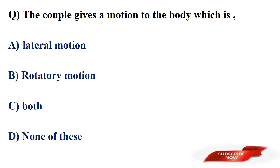The couple gives a motion to the body which is? Options: lateral motion, rotary motion, both a and b, none of those. Answer: option B, rotary motion. The couple gives a rotary motion to the body.